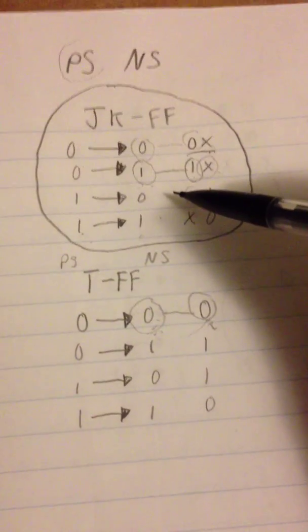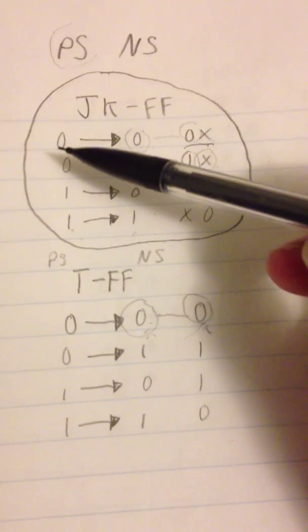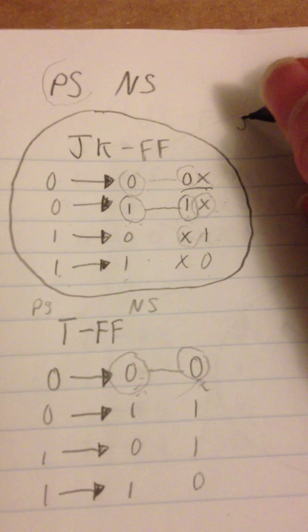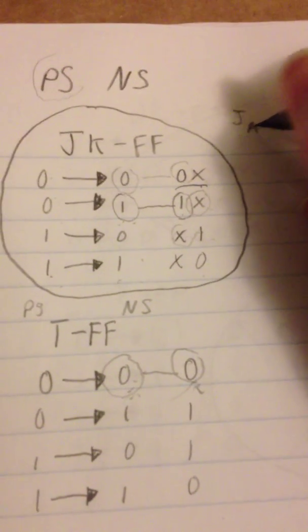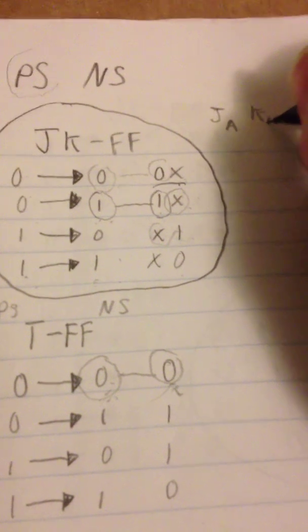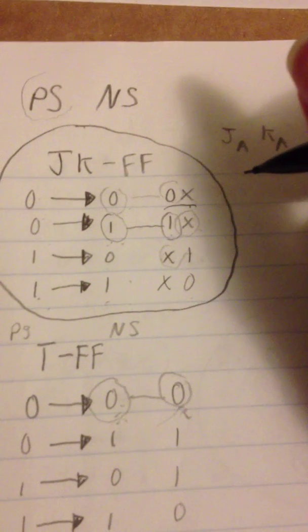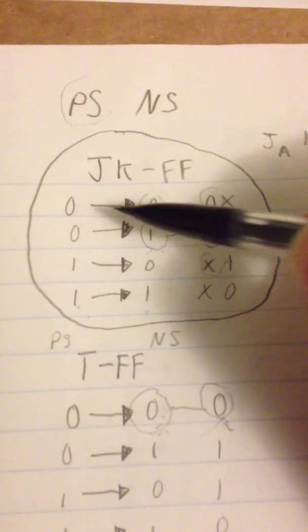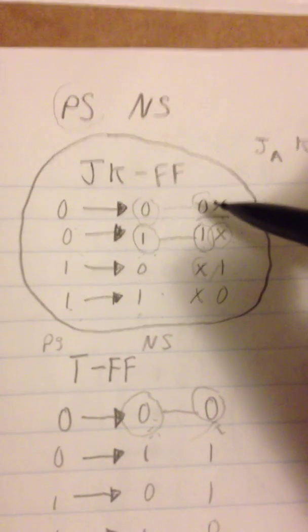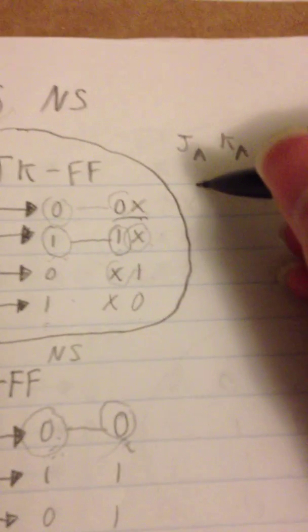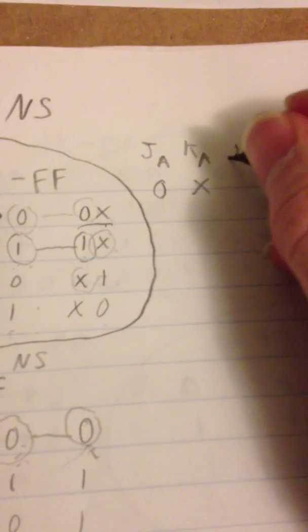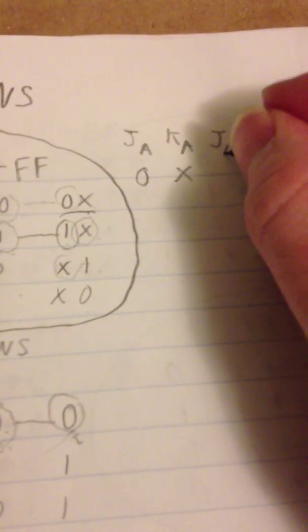You'll notice when you make out the table for — let's say for the JK — the JA and then the KA. So for JA and KA, let's say the present state for A was zero and the next state was zero — then you just fill it in with a zero X. You see what I mean? Zero X. And that's how it works. JB and KB work the same exact way.